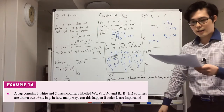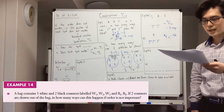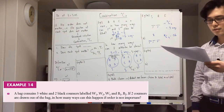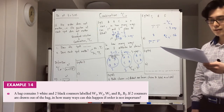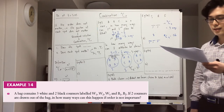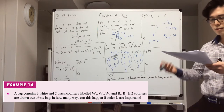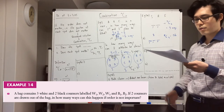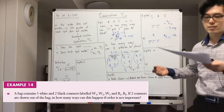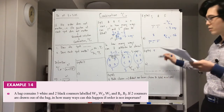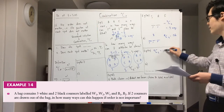Example 14A: a bag contains three white and two black marbles. If two counters are drawn out of the bag, in how many ways can this happen if order is not important? There are five total counters and you're choosing two out of the bag, so that's 5C2, which is 10 ways.